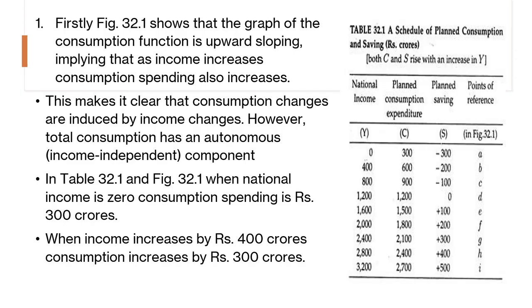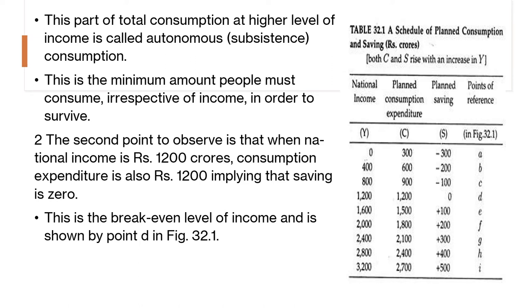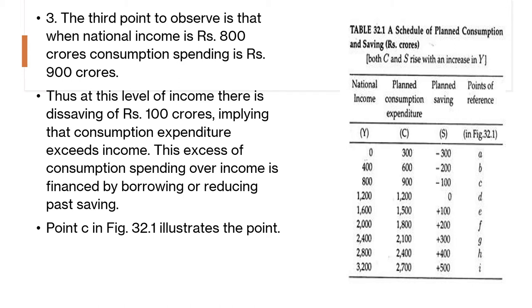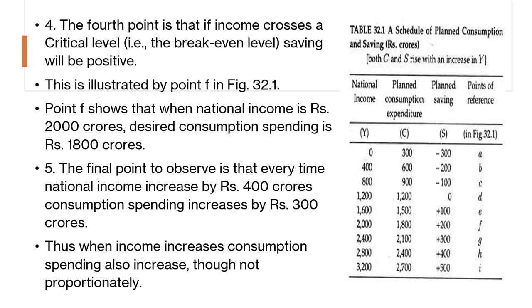When your income increases by 400, consumption increases by 300 — part of the consumption at a higher level of income is autonomous consumption. When national income is 1200, consumption expenditure is exactly equal to 1200 — this is the break-even point. When national income is 800, consumption spending has reached 900, which shows dissaving of 100. Once income crosses the critical break-even level, saving becomes positive and increases with every rise in income. Consumption spending also increases with income, but this is not a proportional relationship.